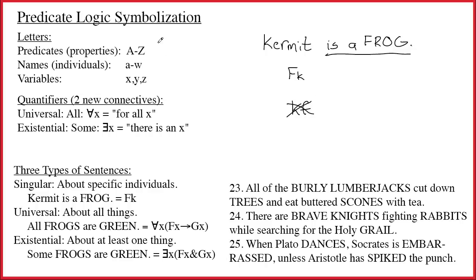Over here on the left, we have all of the elements of predicate logic. First, there are the predicates themselves. Predicates are best thought of as properties, and they'll be symbolized with capital letters. The concept of a predicate in logic is not exactly the same as a predicate in English grammar. In this sentence, 'is a frog' is both the grammatical predicate and the logical predicate. However, in more complicated sentences, logic and grammar diverge, so thinking about properties is definitely the best way to think about predicates.